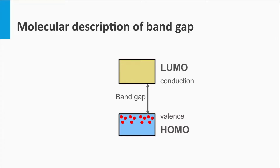Physicists, in general, use the terms valence band, conduction band, and band gap. Chemists might use different terms for the same concepts. They might use the expression highest occupied molecular orbital — the HOMO — as the valence band, and the lowest unoccupied molecular orbital — the LUMO — as the conduction band. The HOMO-LUMO gap would be the band gap.